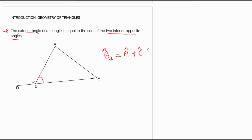The reason you write is: exterior angle of triangle. That's the original theorem. We can prove it the same way we prove the interior angles of the triangle. We can construct a line parallel to AC — let's call it BE.